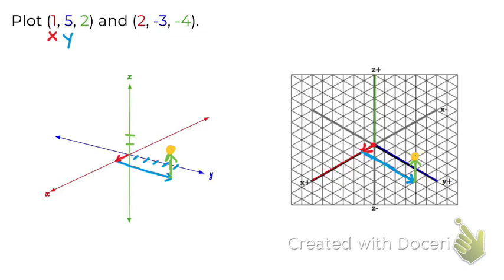Now let's try the second one. So two, negative three, negative four. So on my x axis, I'm going to go positive two. So again, that is going forward. So forward two.